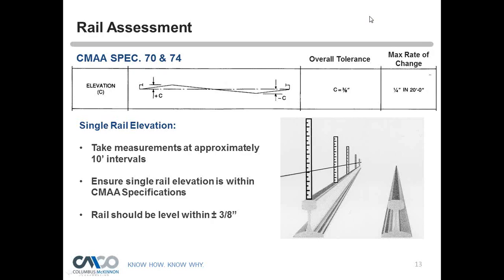Tom explains which rail to start with: typically wherever your electrification system comes into the crane — call that your base or reference rail. Shoot it and make sure the other rail starts at the same elevation. Once you get those two right, you never have to compare the two again other than checking your work at the end of the install.